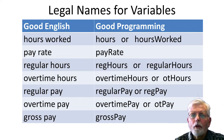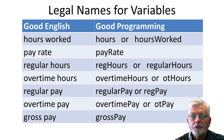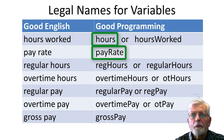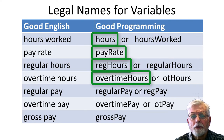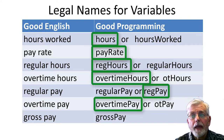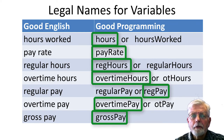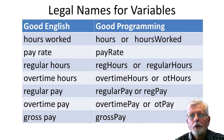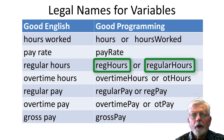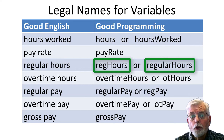I am giving you all the code for the paycheck program including legal variable names. The names I have chosen are: hours, payRate, regHours, overtimeHours, regPay, overtimePay, and grossPay. If you want to experiment, you can choose different but meaningful names for each variable. For example, you could use regularHours instead of regHours. You don't need to use the exact same names that I used, but whatever name you choose, it must be used consistently throughout the program.